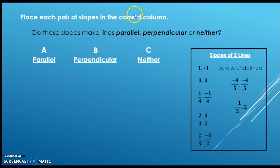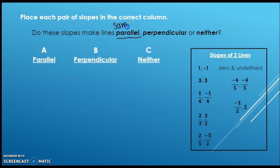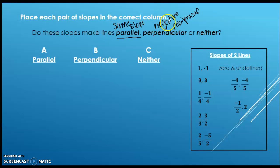Let's take a look at this next question. We want to know: do the slopes of the lines make the lines parallel, perpendicular, or neither? Remember, if you have parallel lines, they have exactly the same slope. A perpendicular line has what's called the opposite or negative reciprocal — you take the sign of your original slope, make it the opposite, and reciprocal means flip the fraction.